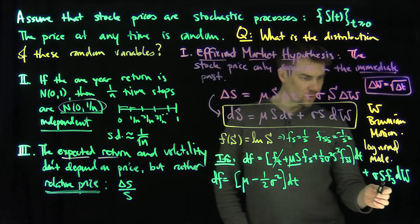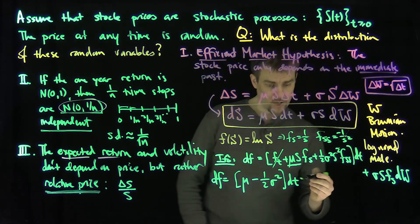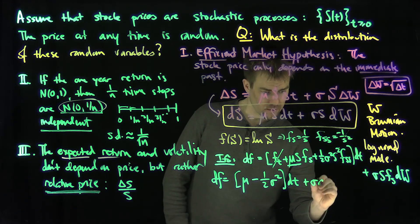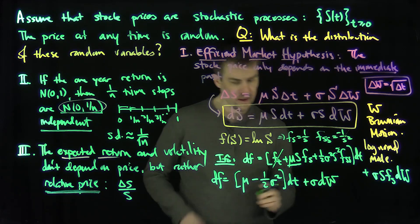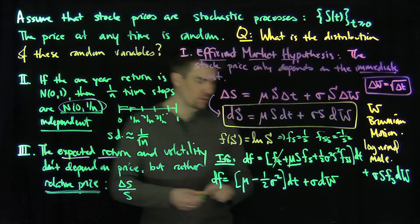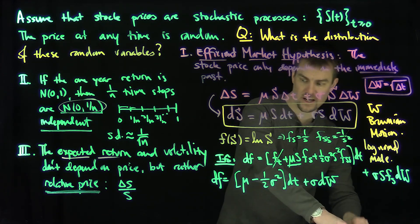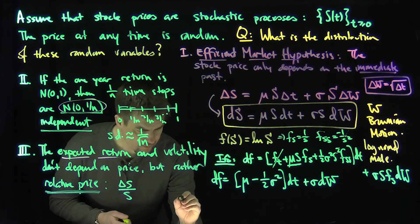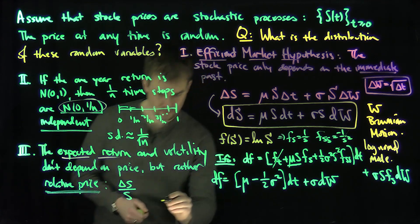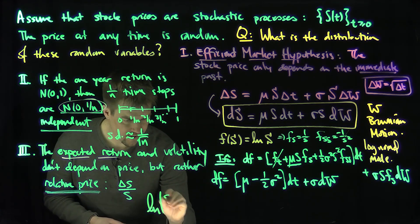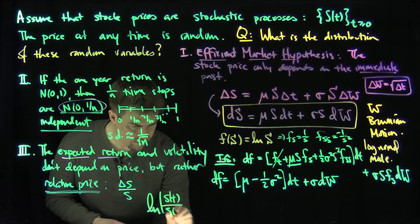And then finally, this term is just going to be sigma dW. Now I know exactly what F is. So the log of S, if I integrate this stochastic equation, I'm going to get that the log of S(T) over S(0) is going to be mu minus one-half sigma squared T plus sigma W(T).